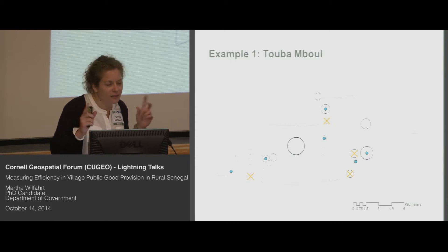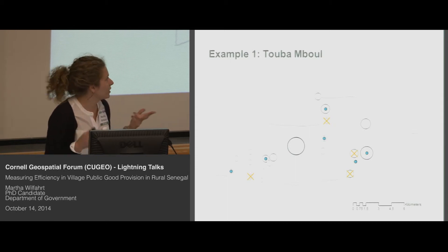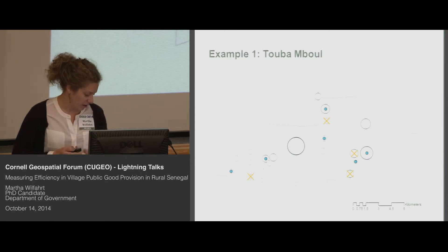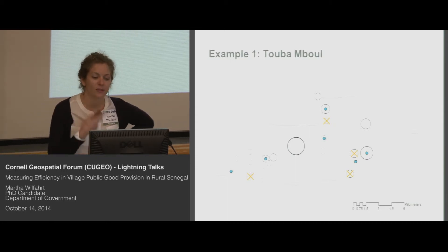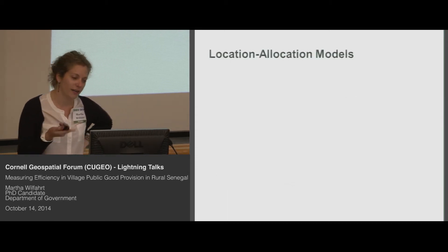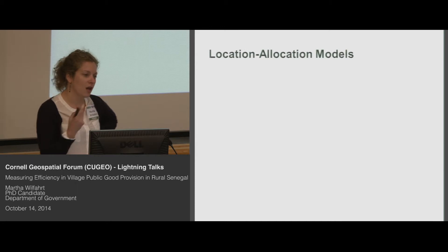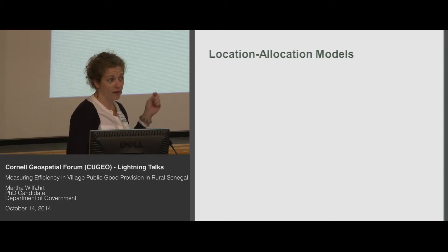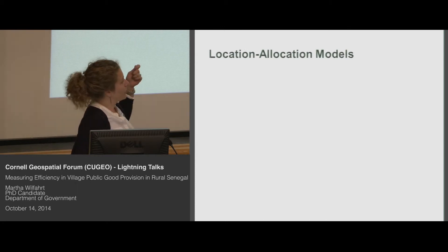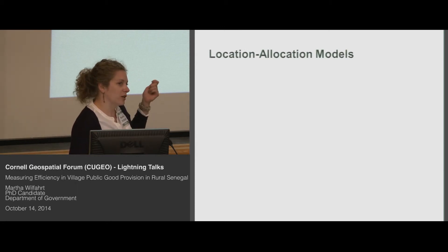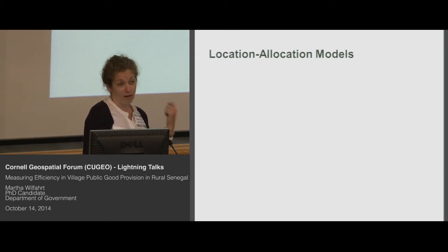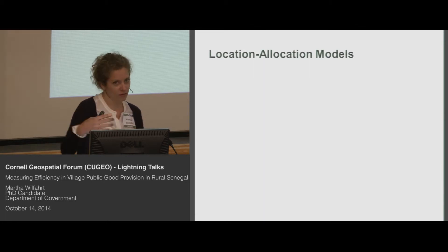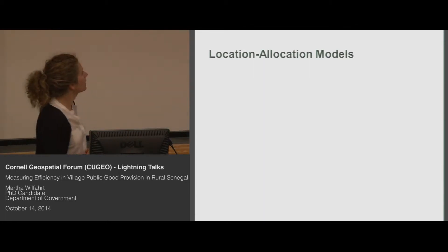This is the type of puzzling variation that I'm going to be looking at. I'm using location allocation models in order to test whether these points that seem like they should get a school really are the best place to get a school, and then to use that as a baseline.